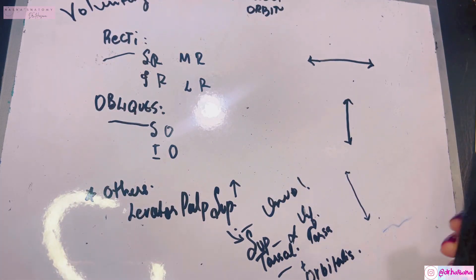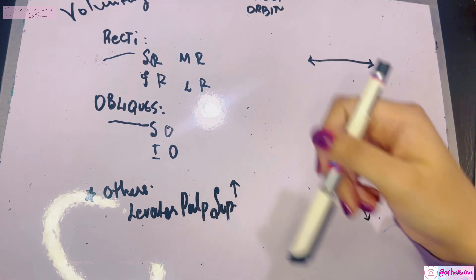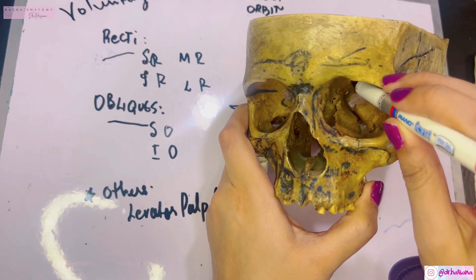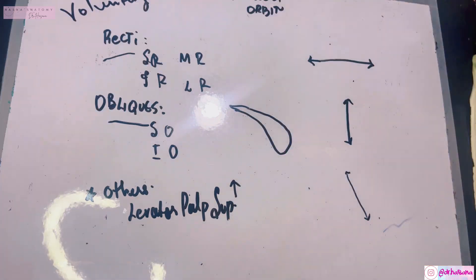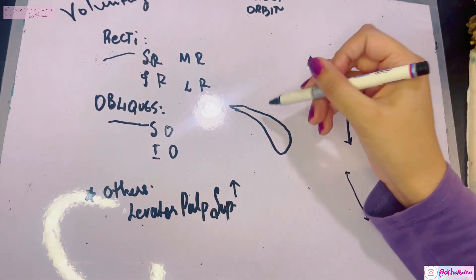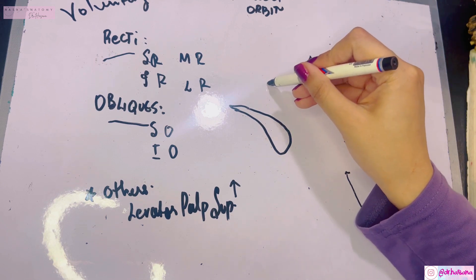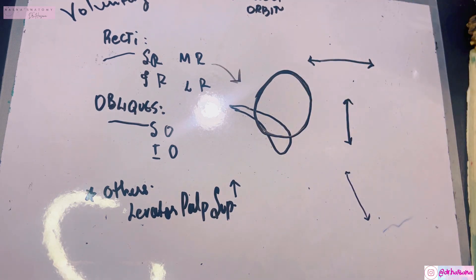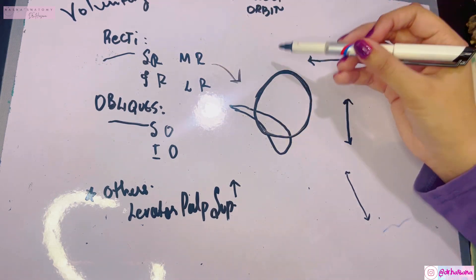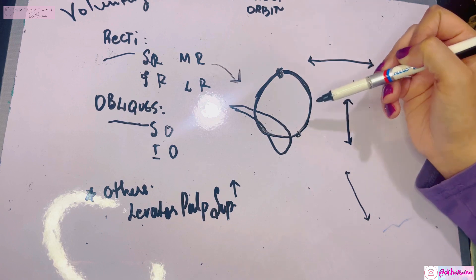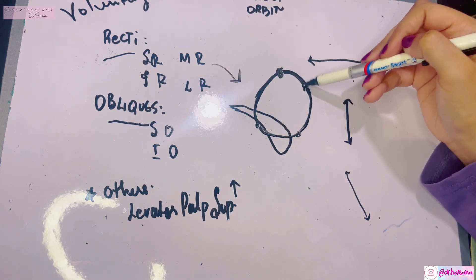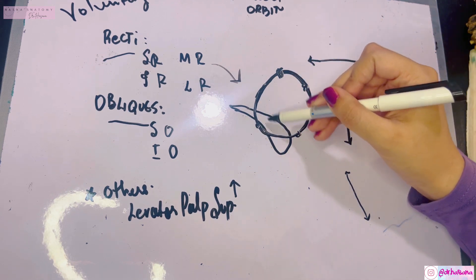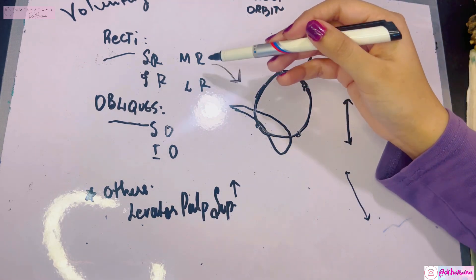Now let's discuss the origins of the voluntary muscles. The superior orbital fissure lies at the junction of the roof and the lateral wall. There is a common tendinous ring of Zinn through which all the recti muscles originate — superior, inferior, medial, and lateral rectus each arise from their corresponding part of this ring. This common annular tendon passes through the middle part of the superior orbital fissure.